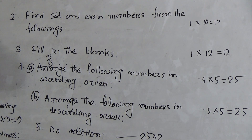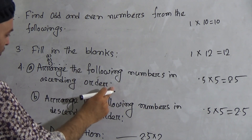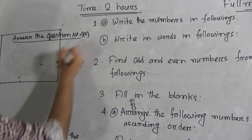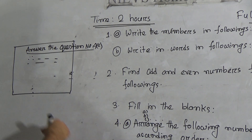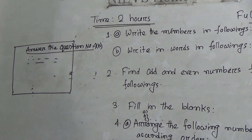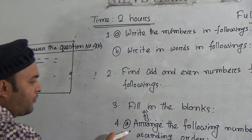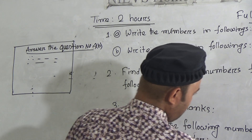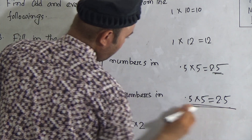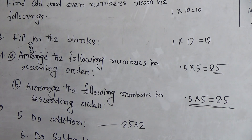After finishing question three, go to question number four. There are two sub-questions: A and B. Question 4A is to arrange the following numbers in ascending order, and 4B is to arrange the following numbers in descending order. Write the answer for 4A here, and then write the answer for 4B. Question 4A contains 2.5 marks — that is 0.5 multiplied by 5 — and 4B also contains 2.5 marks.